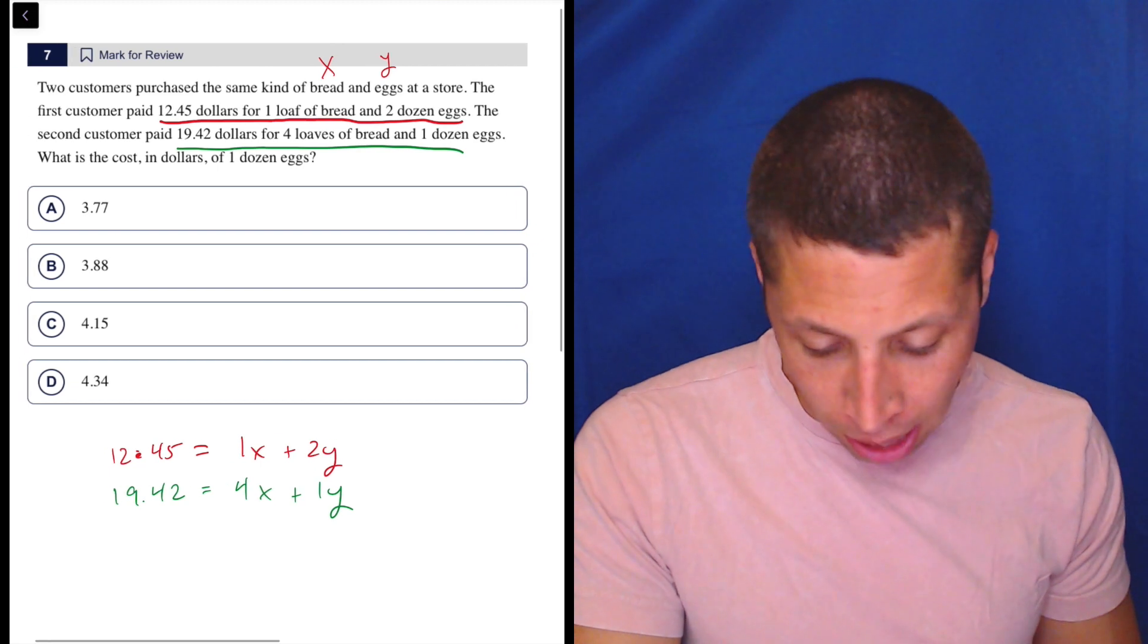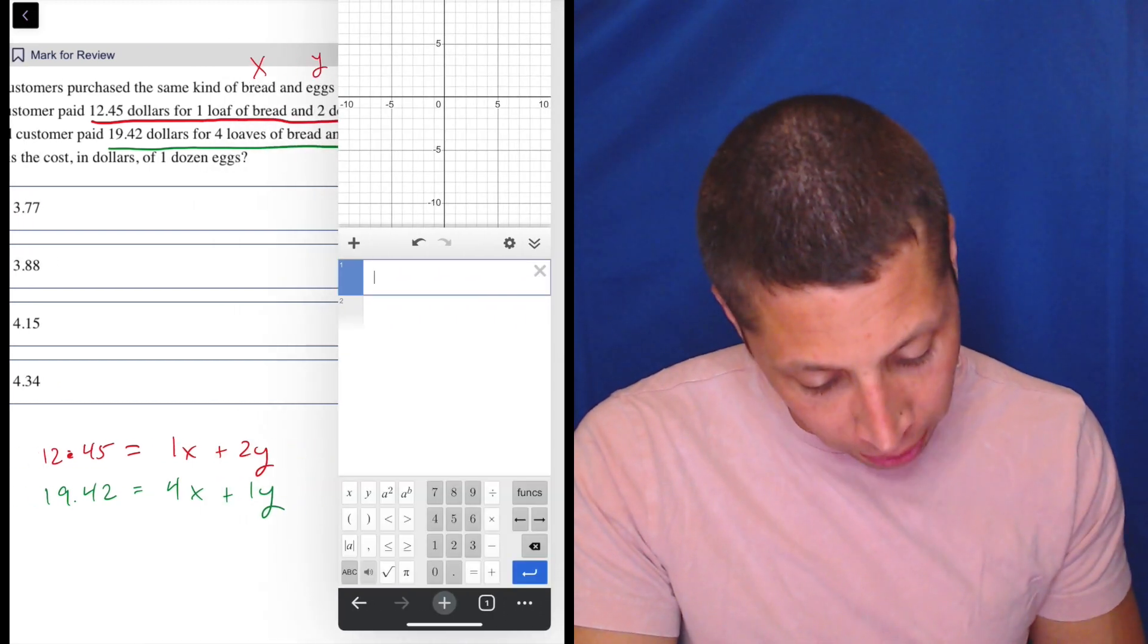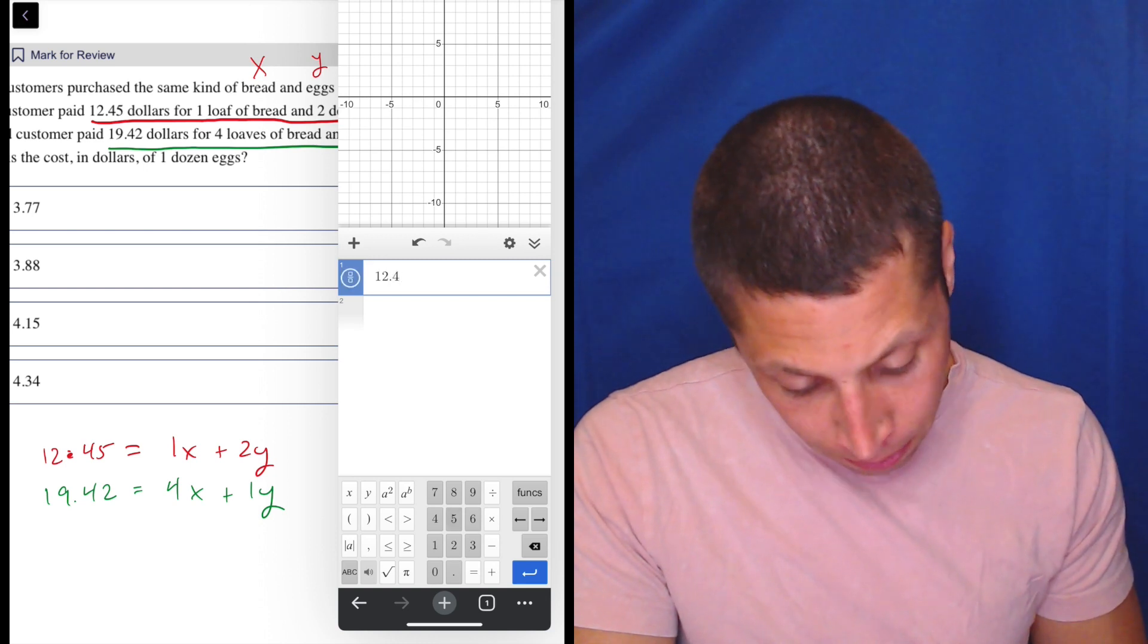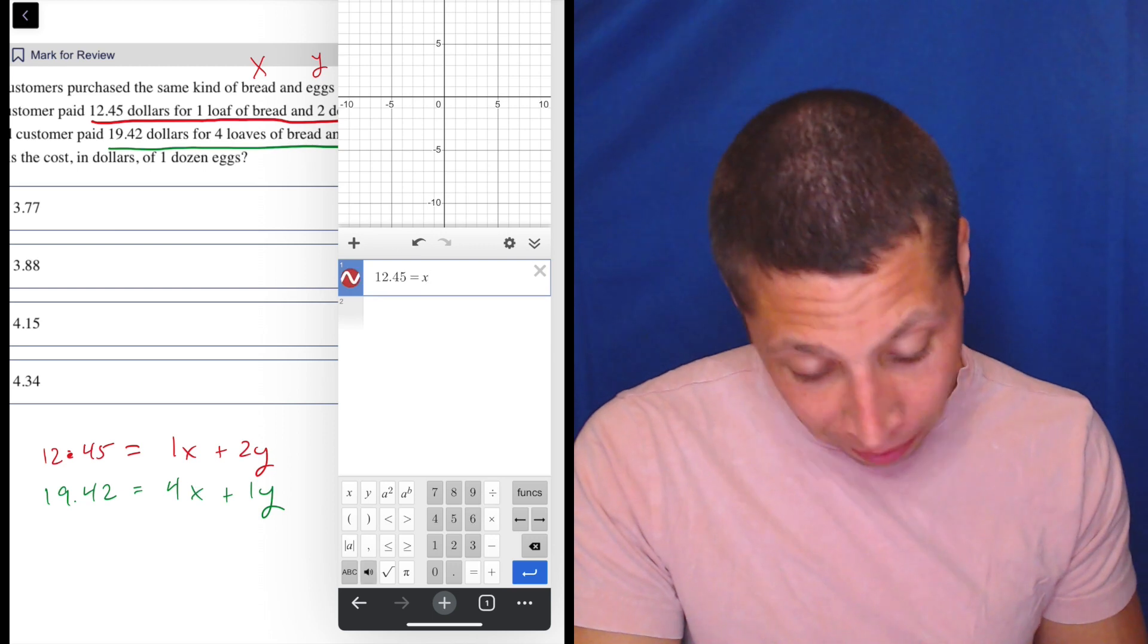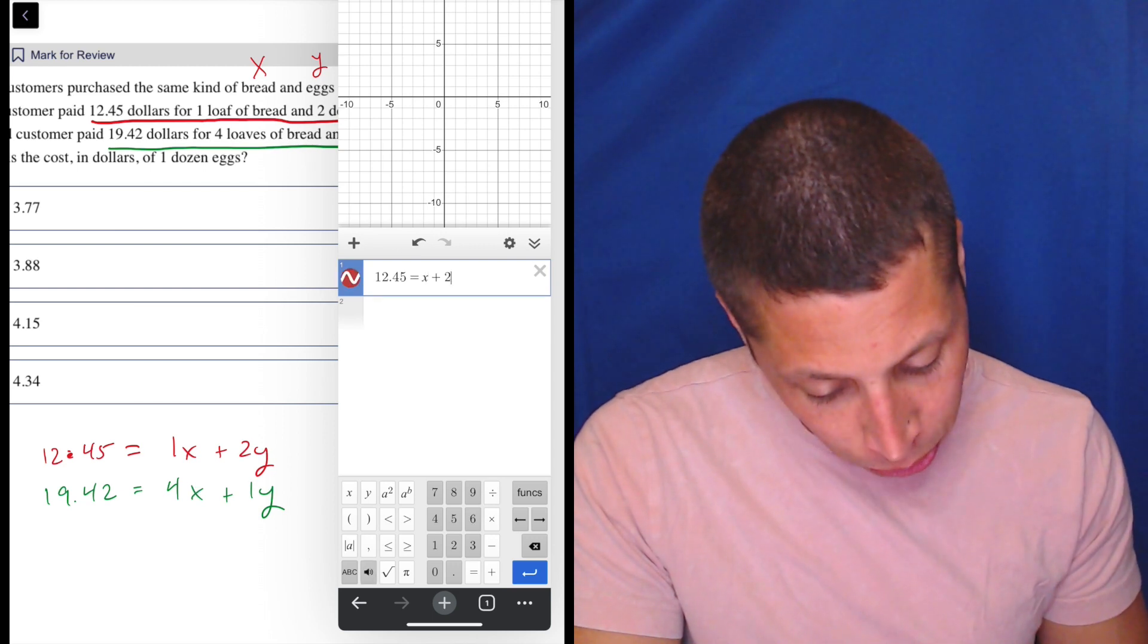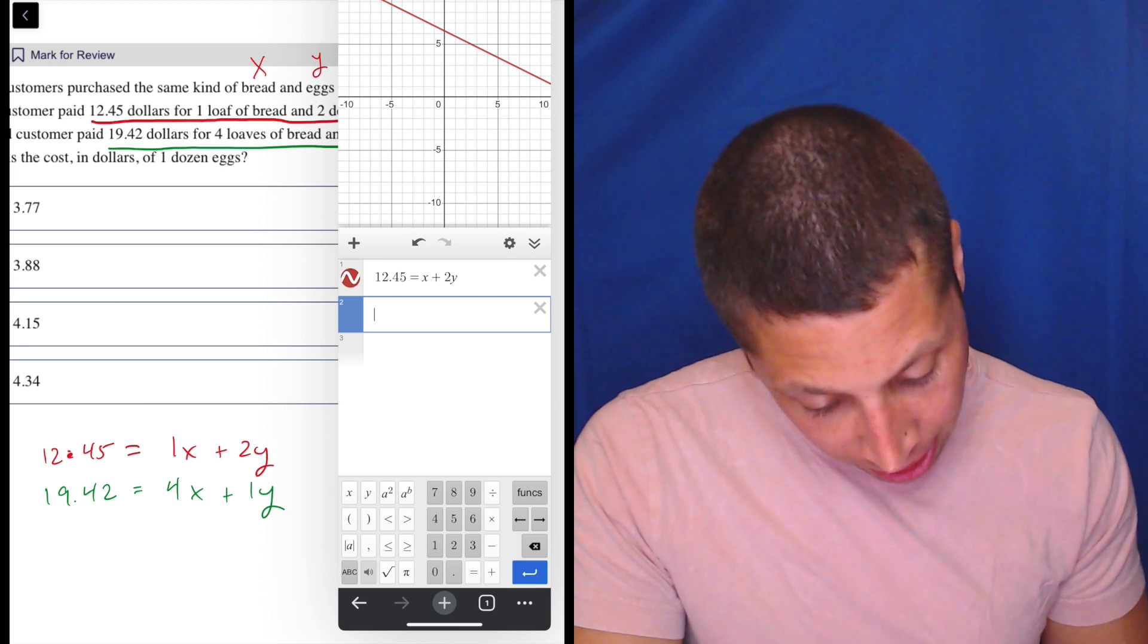There are ways to solve these algebraically, but again, just like why? Why bother? Why open the door to any sort of error? So 12.45 is equal to, and this time I'm going to leave out the one, X plus 2Y, and enter, and 19.42.